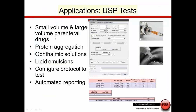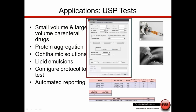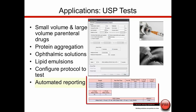The AccuSizer SIS is used in the pharmaceutical industry to look at large and small volume parenteral drugs, protein aggregation, and ophthalmic solutions — samples where we want to minimize the number of particles. It's used as a liquid particle counter to quantify the number and size of particles in what should be very clean fluids. The software protocol defines the size range, sample volume, and mixing parameters. Automated reporting includes a USP 788 report showing the number of particles greater than 10 and 25 microns and automatically calculating pass/fail criteria.